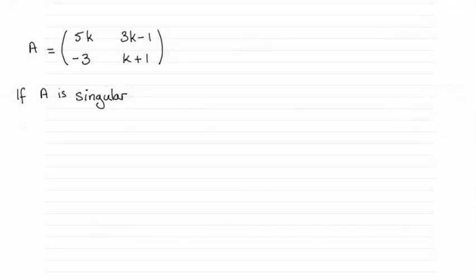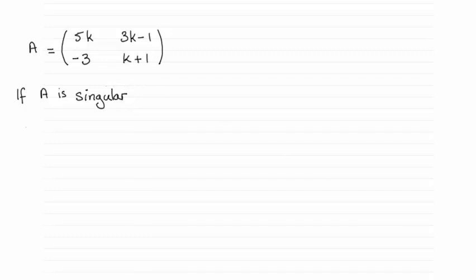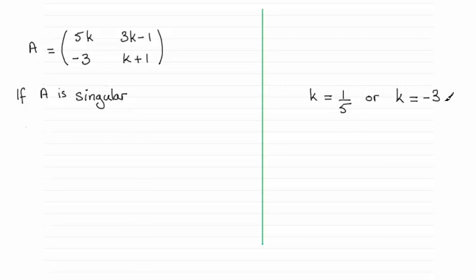Hi there. So for this question, we were given this matrix A: 5k, 3k minus 1, minus 3, and k plus 1. And we're asked to find the values of k if A was a singular matrix. Well, the answers turn out to be that k equals a fifth or k equals minus 3.